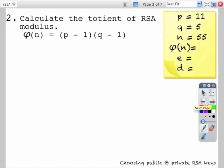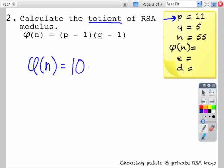Now we need to calculate the totient of the RSA modulus. The totient of the RSA modulus is p minus 1 times q minus 1. So p minus 1 is 10 times q minus 1 which is 4. So our totient is going to be 40.